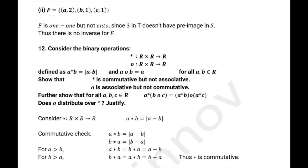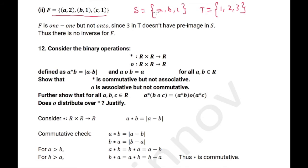Now the next question: f is defined as a→2, b→1, c→1. Note that S = {a, b, c} and T = {1, 2, 3}. So a is mapped to 2, b is mapped to 1, and c is mapped to 1.